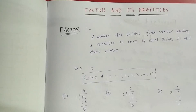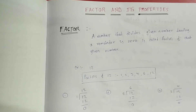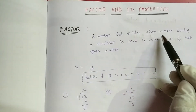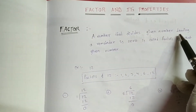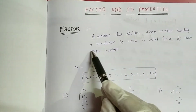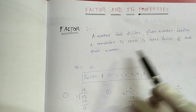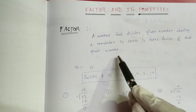Hi students! Today's topic is factors and its properties. Factor definition: a number that divides a given number leaving a remainder of zero is called a factor of that given number.